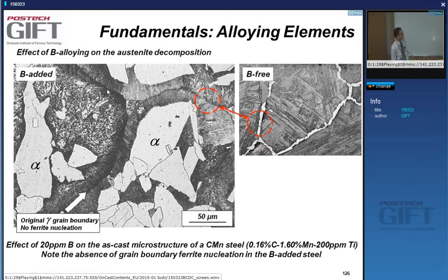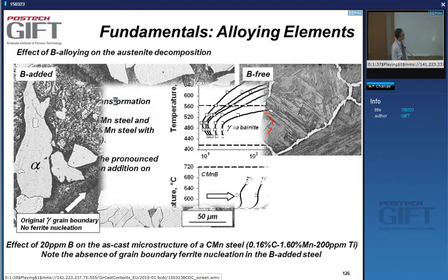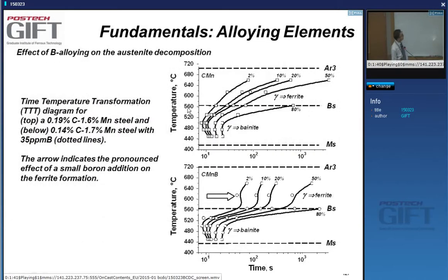As a consequence, when you look at this TTT diagram, you can see the top part is related to ferrite formation and the lower part to martensite and bainite. In the same steel with boron added, you can see that the transformation is retarded — that's a consequence of this boron addition.